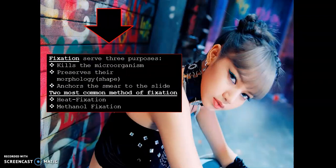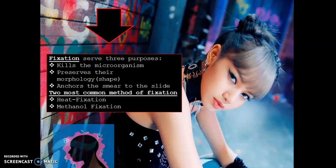In bacteria, there is a process called fixation. Fixation is the act or process of fixing or fixating. There are three purposes: first, to kill the microorganism; second, to preserve their morphology or shape; and third, to anchor the smear to the slide. There are two common methods of fixation: heat fixation, which kills bacteria in the smear; and methanol fixation, which denatures or precipitates and can maintain the structure of bacteria in the smear.